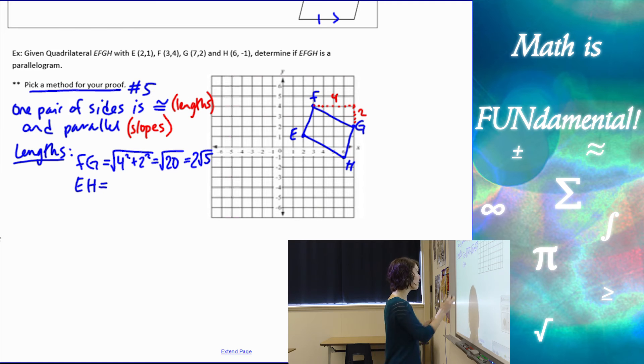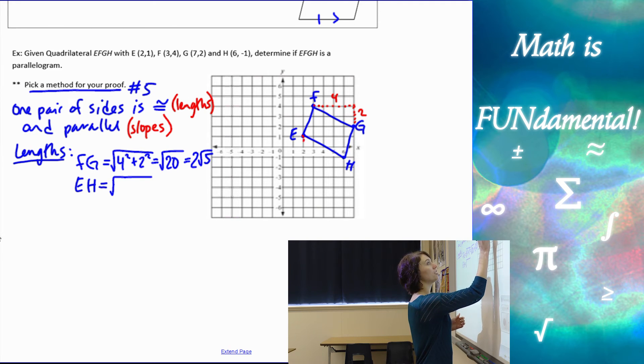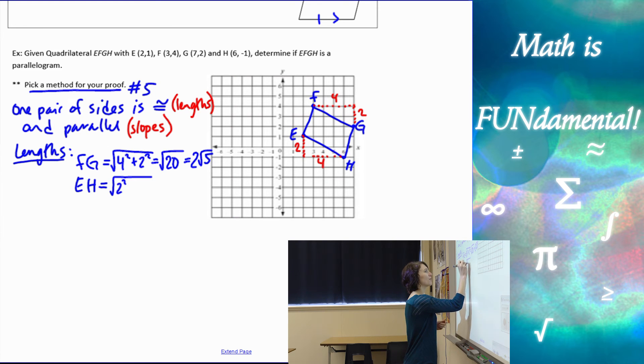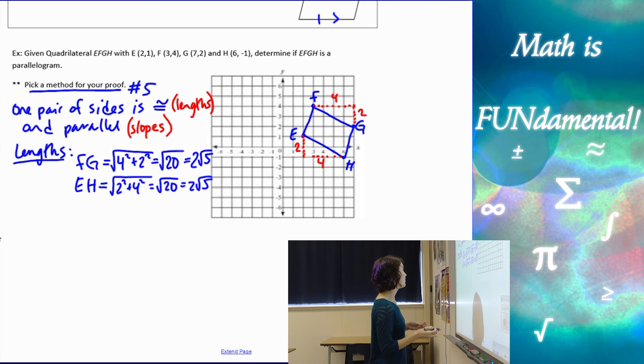Now we need to find EH. I go straight down and over. This went from 1 to -1, so that's 2, and this went from 2 to 6, so that's 4. EH equals the square root of 2 squared plus 4 squared, which is the same as we had before.